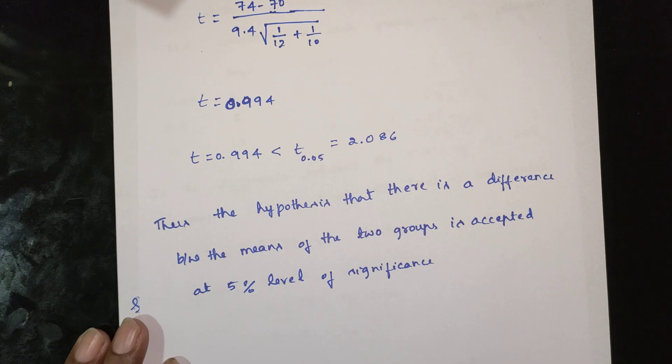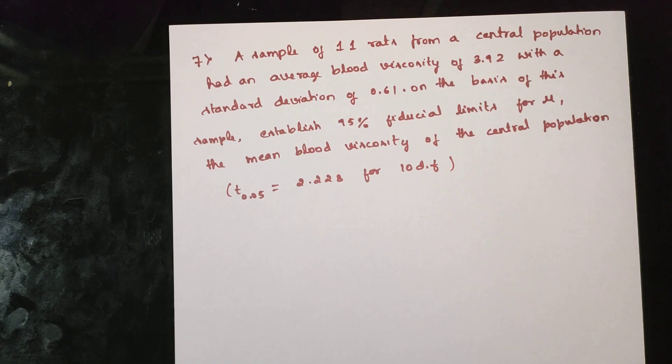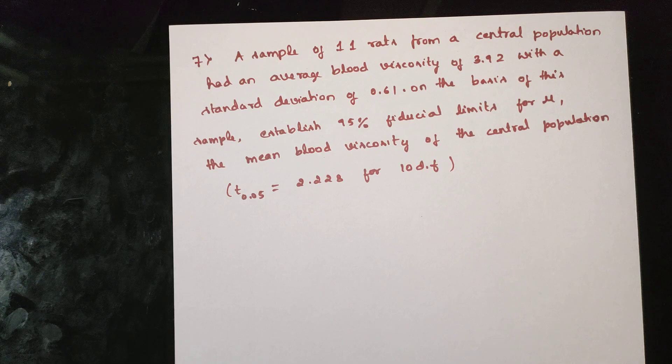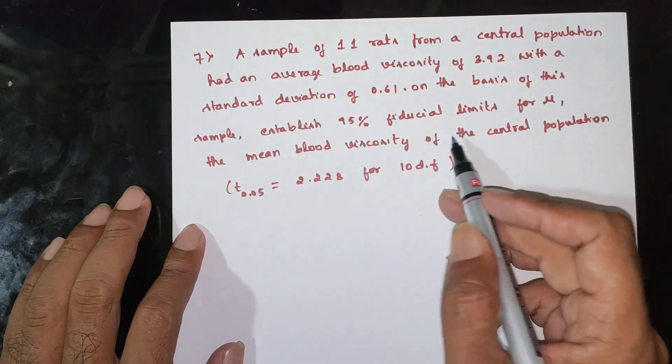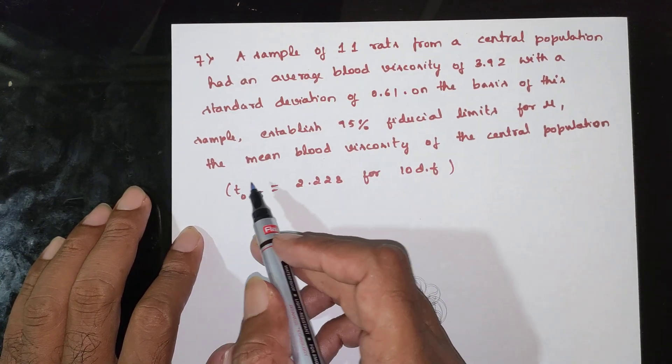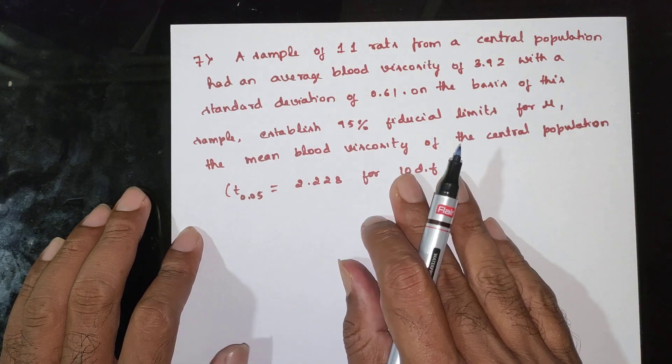Next question: A sample of 11 rats from a central population had an average blood viscosity of 3.92 with a standard deviation of 0.61.